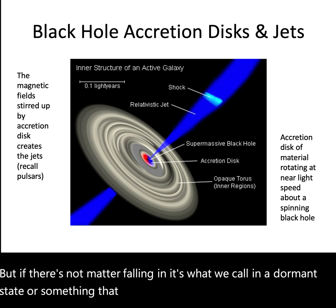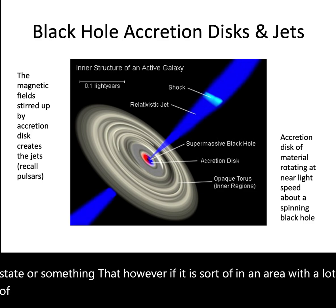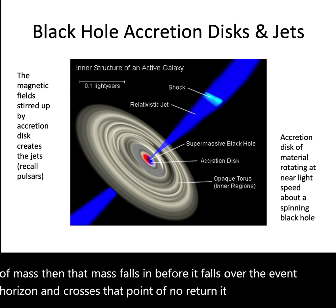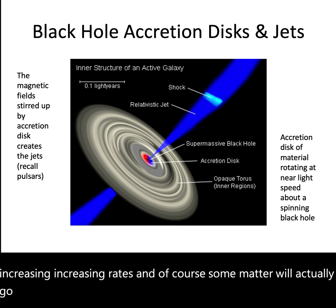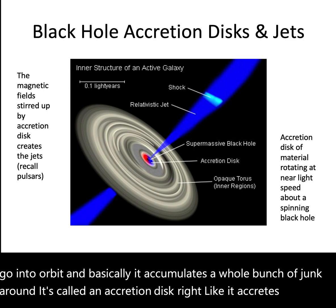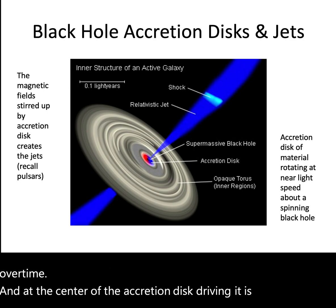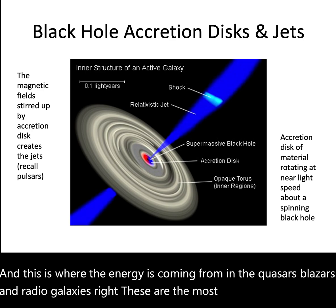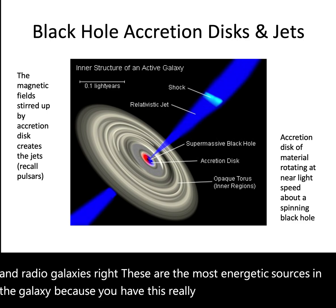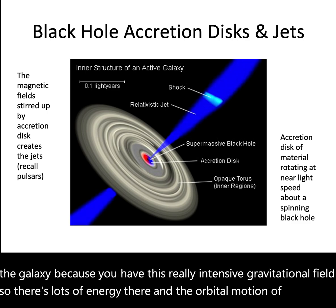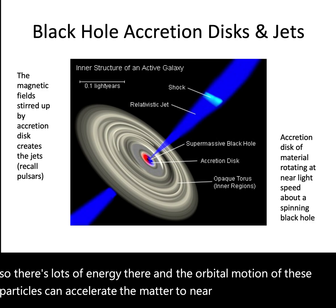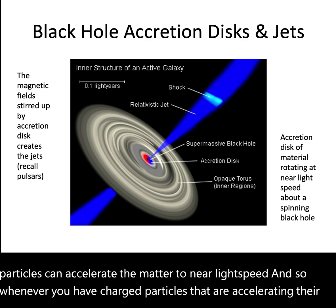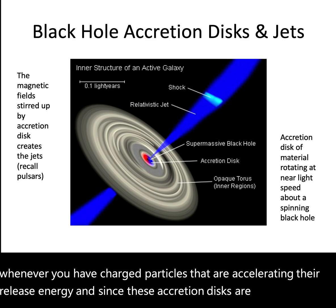However, if the black hole is in an area with a lot of mass, that mass falls in. Before it crosses the event horizon — the point of no return — it swirls at increasing rates, and some matter goes into orbit. It accumulates a whole bunch of material around it called an accretion disk. At the center of the accretion disk, driving it, is the black hole. This is where the energy is coming from in quasars, blazars, and radio galaxies — the intensive gravitational field provides lots of energy, and the orbital motion can accelerate matter to near light speed.